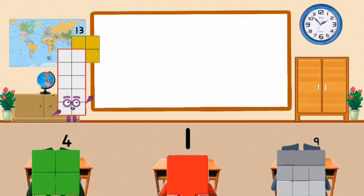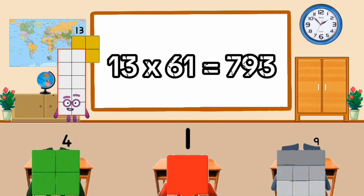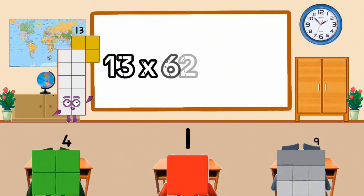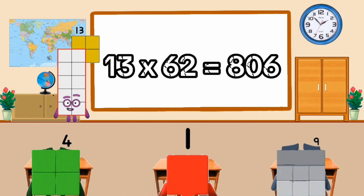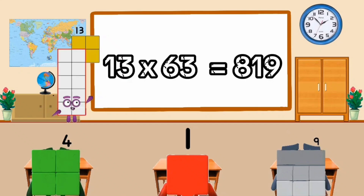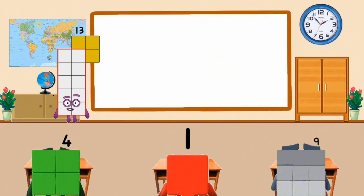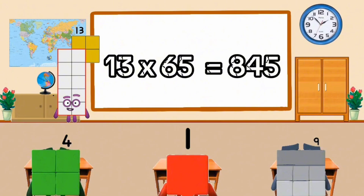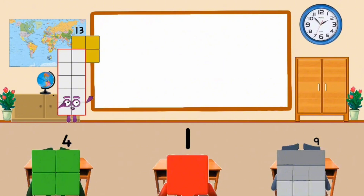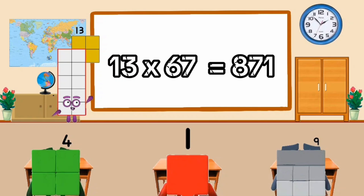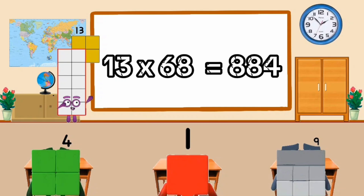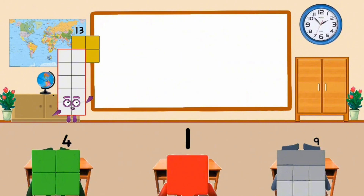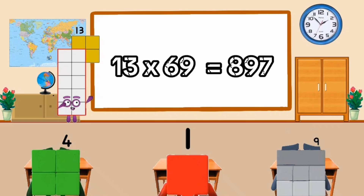13 times 61 equal 793. 13 times 62 equal 806. 13 times 63 equal 819. 13 times 64 equal 832. 13 times 65 equal 845. 13 times 66 equal 858. 13 times 67 equal 871. 13 times 68 equal 884. 13 times 69 equal 897.